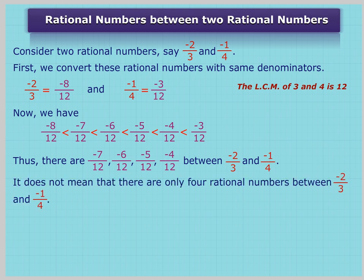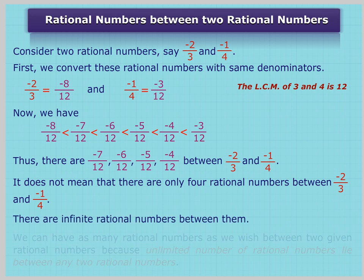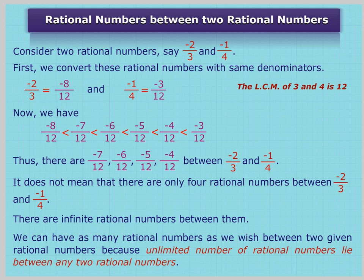It does not mean that there are only four rational numbers between -2/3 and -1/4. There are infinite rational numbers between them. We can have as many rational numbers as we wish between two given rational numbers, because an unlimited number of rational numbers lie between any two rational numbers.